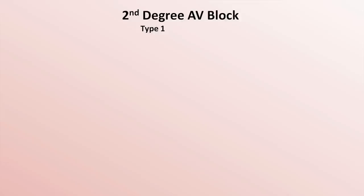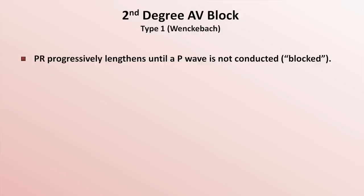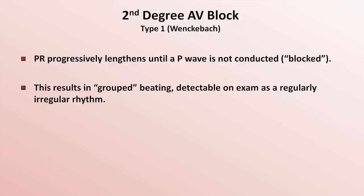Looking at type 1 first — which confusingly is also referred to by yet another eponym, Wenckebach block — in type 1 second degree block, the PR interval progressively lengthens until a P wave is not conducted. This non-conducted P wave is often said to be blocked. This pattern results in grouped beating, which is detectable on physical exam as a regularly irregular rhythm.